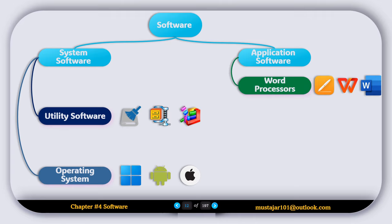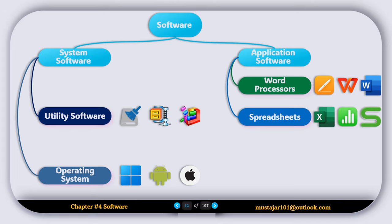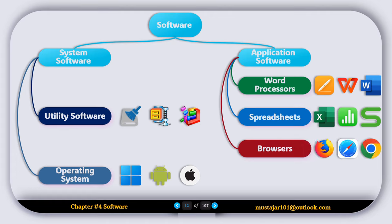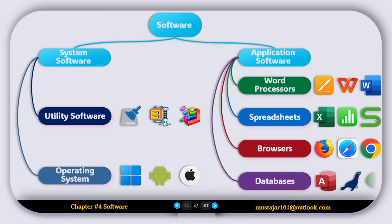Application software has four types. Word processors allow us to write documents — examples include Microsoft Word, WPS, and Pages. Spreadsheets include Excel, Numbers, and WPS Spreadsheet. Web browsers include Firefox, Chrome, and Safari. Finally, database software examples include Microsoft Access, SQL, and MongoDB.